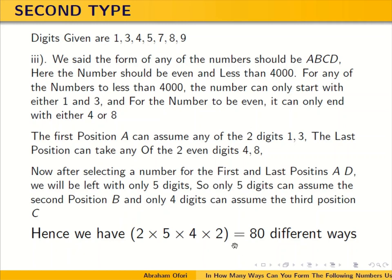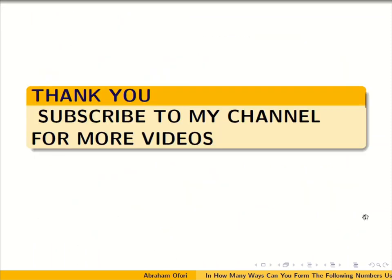So we have 80 different 4-digit numbers that can be formed if the numbers should be less than 4,000 and also even. This is the solution to the question. Thank you, and subscribe to my channel for more videos.